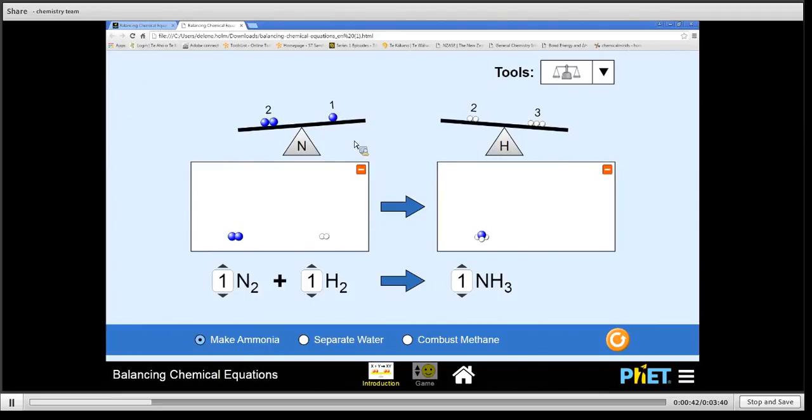So I have too few nitrogens on the right hand side so the only way I can add more nitrogen is by adding another ammonia. So you can see I now have two nitrogen atoms, two of those blue ones and I have two there.